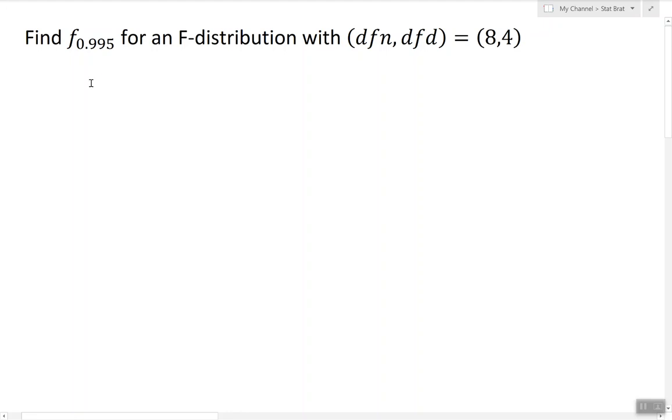In our case we're looking for F 0.995 with 8 and 4 degrees of freedom. However, the F table doesn't provide the answers for alphas this big.